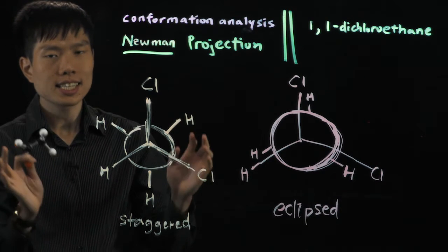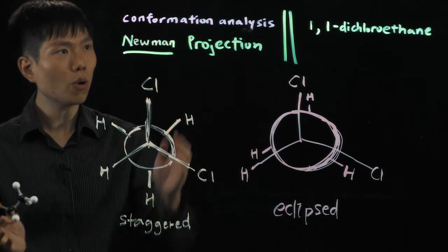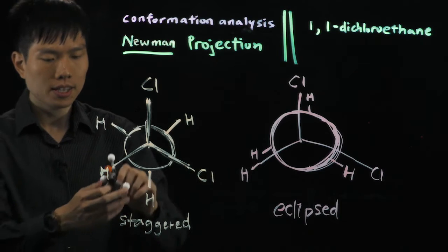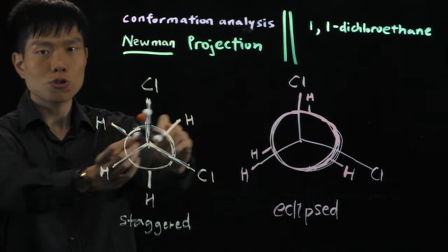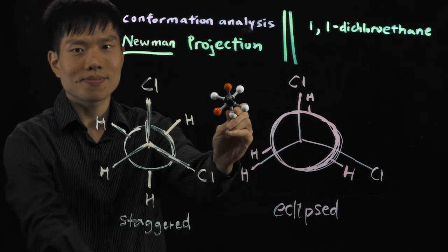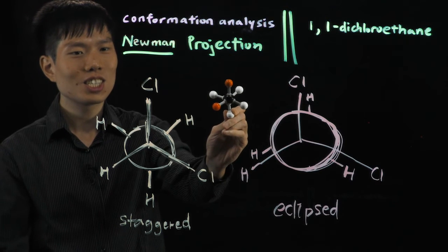So, if you realize, there are only two different unique Newman projections that we can draw for 1,1-dichloroethane: staggered and eclipsed. Now, in the first case, if you look through this, you will have a staggered conformation because you can see all six atoms. They're not blocking each other, right?